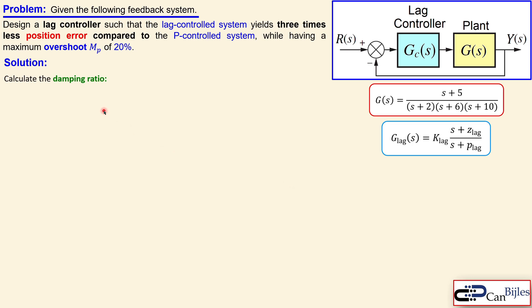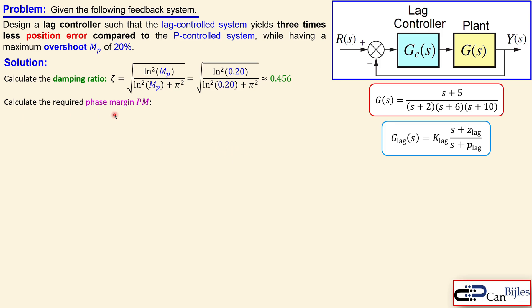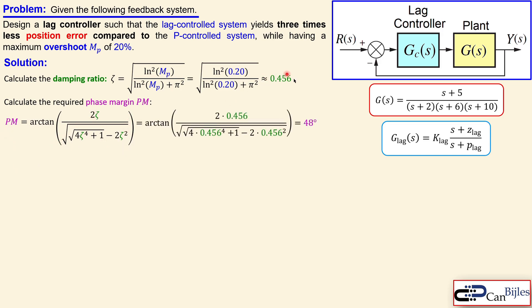We first start with the calculation of the damping ratio given from the overshoot — that's where we start for the frequency response analysis. Zeta can be calculated using M_P as a scalar value; 20% becomes 0.2. Substituting that into the formula gives zeta = 0.456. Now we calculate the required phase margin using this formula with zeta, and substituting the value gives 48 degrees — that is what we require as phase margin to get maximum overshoot of 20%.